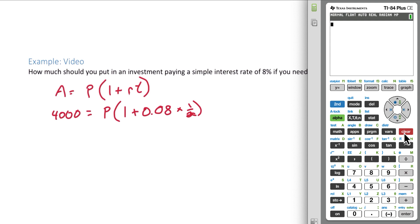Let's simplify inside the parentheses. We have 1 plus 0.08 times a half, which gives us 1.04.